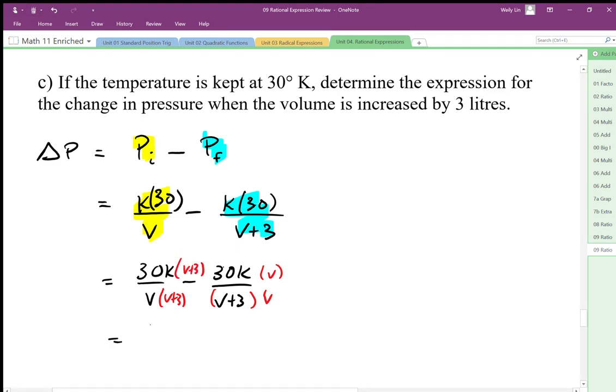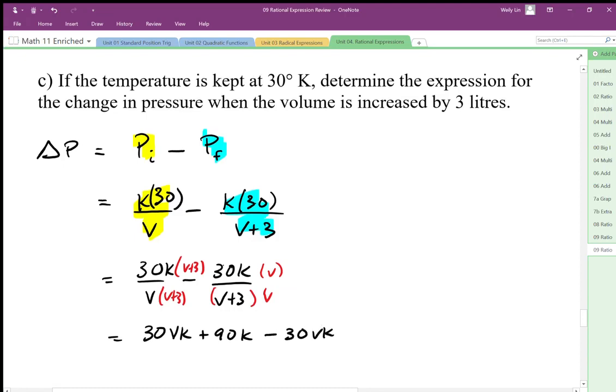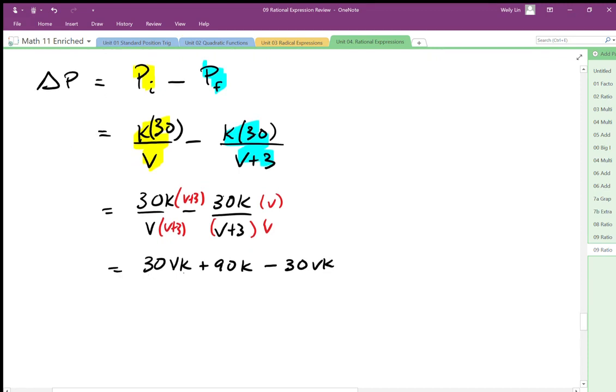My expression now looks like this: 30Vk plus 90k minus 30Vk. The Vk's cancel out.